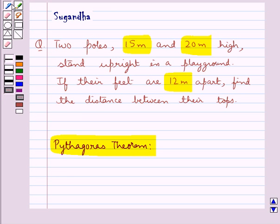According to this we have that in a right triangle the square of the hypotenuse